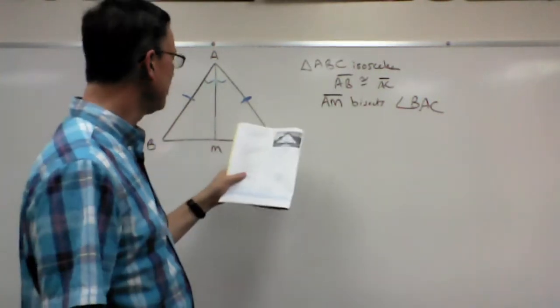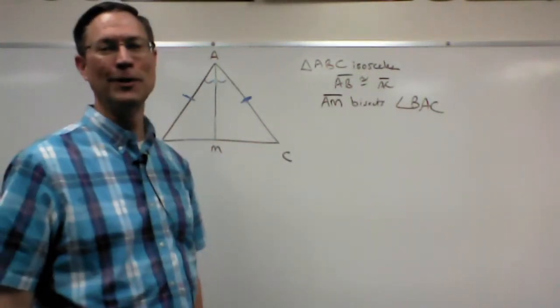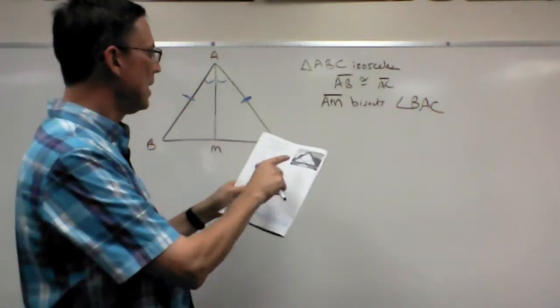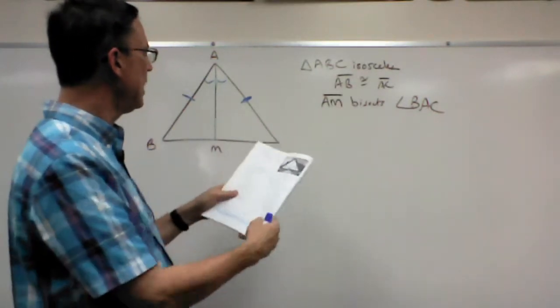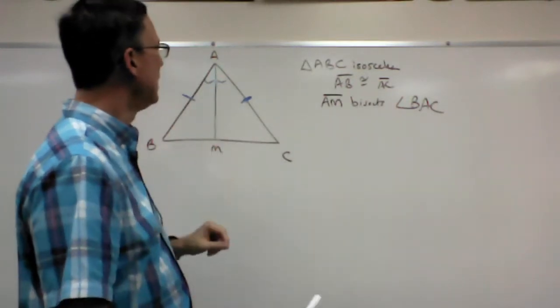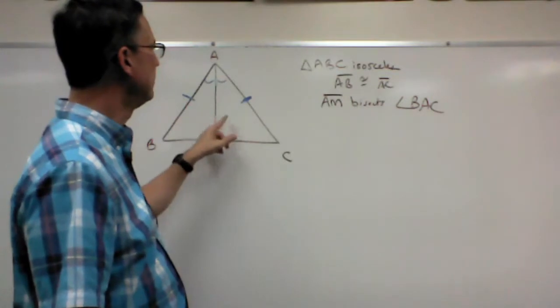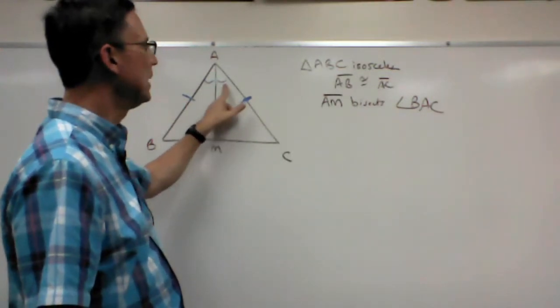Now I'm looking here on page 21. Obviously, the first reason, that's always easy, right? You can just write given for that. So that's easy. And then the second one, angle BAM is congruent to angle CAM. And it says definition of, and what do you think that's the definition of? How do we know these two angles are congruent?